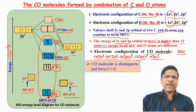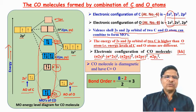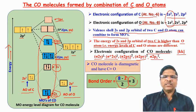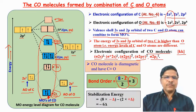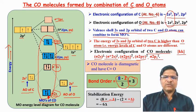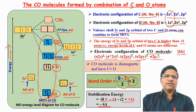The electronic configuration for the CO molecule is: KK σ2s² σ*2s² π2px² π2py² σ2pz². The bond order is (8 − 2)/2 = 3, meaning there are 3 bonds between carbon and oxygen — one sigma and two pi bonds. The stabilization energy is 8(−Δ) + 2(+Δ) = 6Δ, which is very high. So the carbon monoxide molecule is stable and exists in the gaseous state.